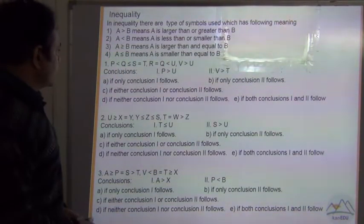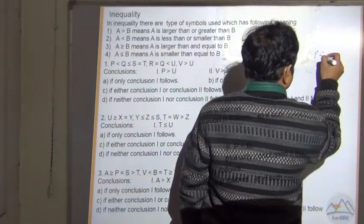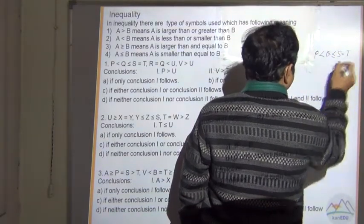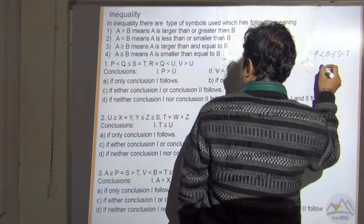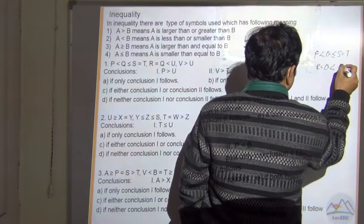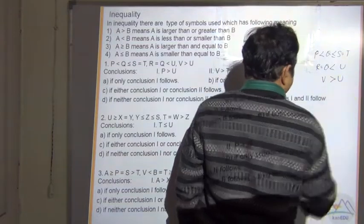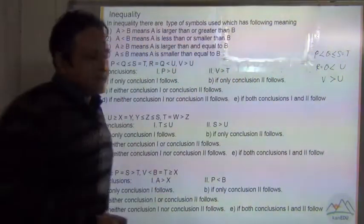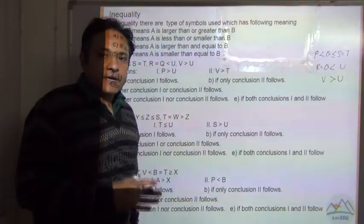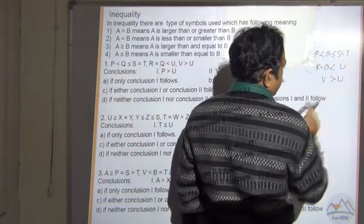Now let's see question number 1: P less than Q less than equal to S is equal to P, and we have R less than V greater than U. In this case we have to start by assuming certain numbers. We can see in the end case that V is greater than U.